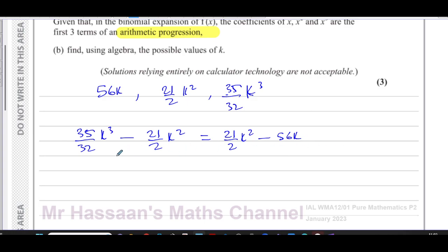Now what I can do is I can bring everything on one side. So this is 35 over 32k cubed. Now minus 21 over 2 minus another one, 21 over 2, is going to be minus 42 over 2, so that's going to be minus 21k squared. And then I have plus 56k equals zero.